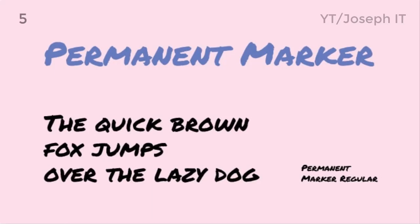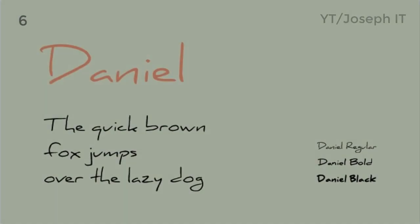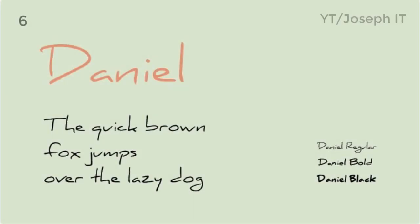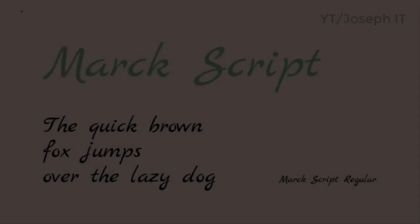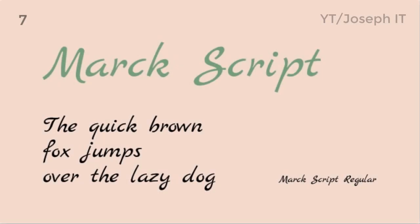Permanent Marker shows the look and feel of a popular writing instrument. It only has capital case and regular writing variant. Number six: Daniel. Those who write whimsically can use this font. It has capital and smaller cases with regular, bold, and Daniel Bold font formats.